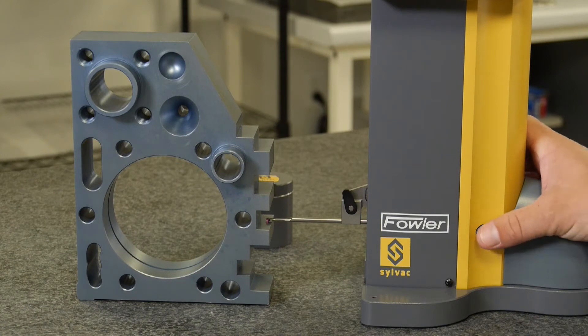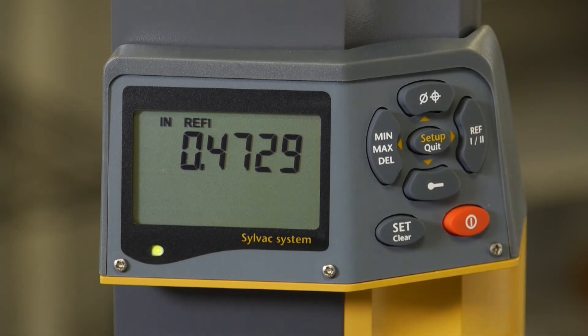If I ask for the function, the difference, 472 thousandths is the difference from my previous surface to my current surface.